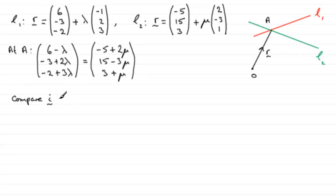So if I compare the I components, we've got 6 minus lambda equals minus 5 plus 2 mu. And if I make lambda the subject from this one, I'm going to get that therefore lambda equals, if I add lambda to the right hand side, and if I add 5 to both sides, I'm going to get 6 plus 5, which is 11, and then subtract the 2 mu, I'm going to get minus 2 mu. So there's one equation, let's call it 1.